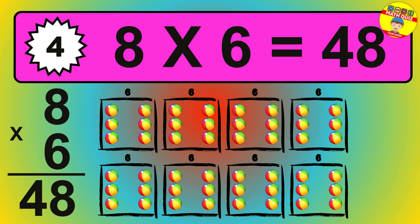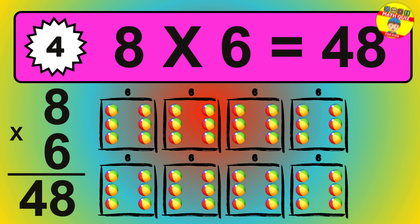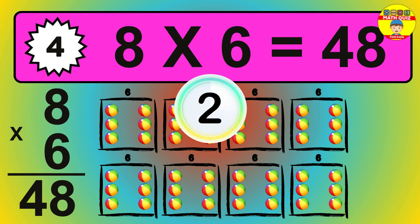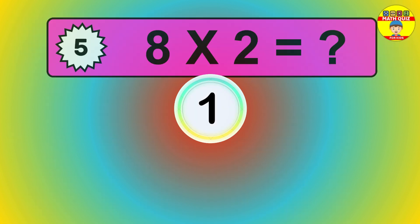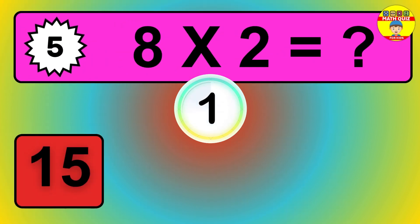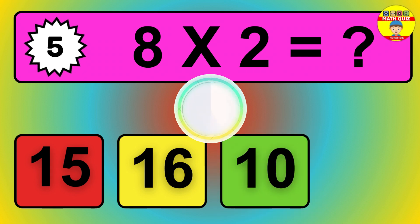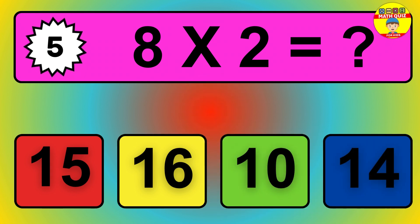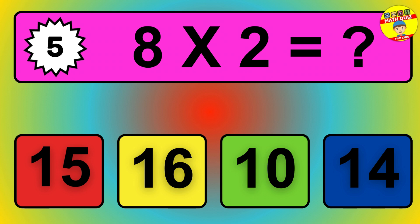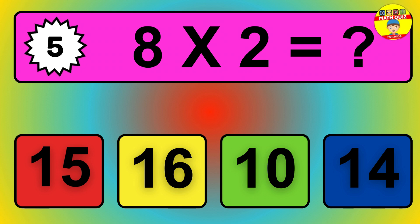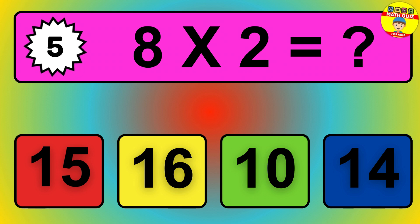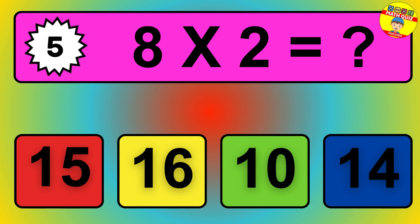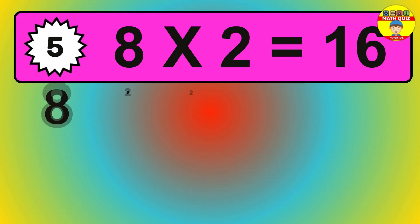Question 6. 4 times 5 equals what? The answer is 4 times 5 is 20. To calculate, we have 4 groups with 5 balls each one. So, how many balls do we have? 20 balls.